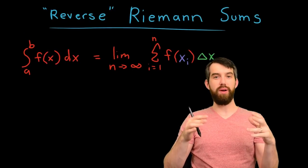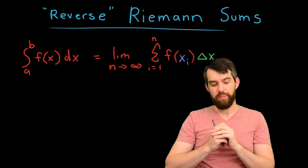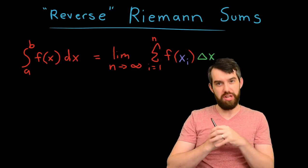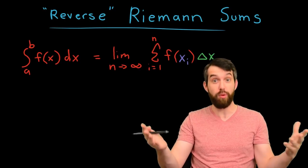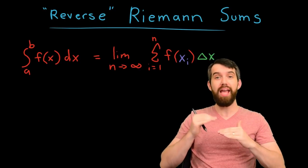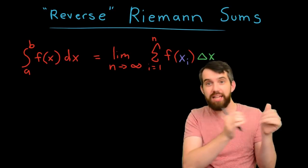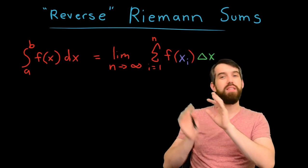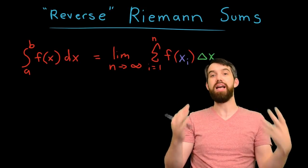In this video, I want to talk about a particular type of problem involving Riemann integration. So what I've written down here is the definition of the integral via Riemann sums. In other words, I'm saying the integral from a up to b of some function f of x dx, that this is defined to be this limit of the sum of f of x_i's delta x.